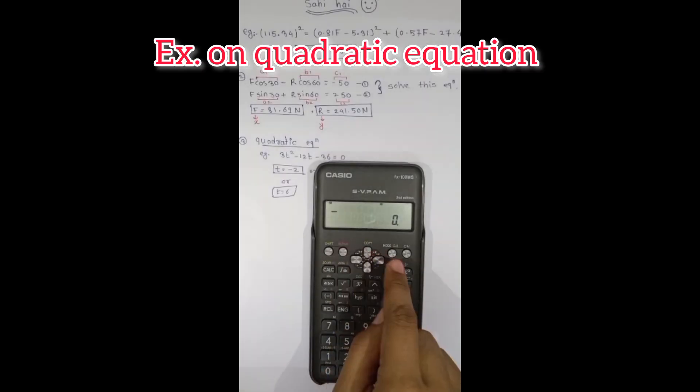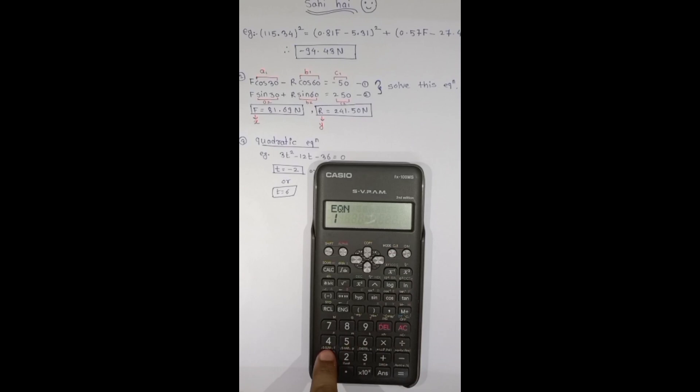Let's take another example which is quadratic equation. Mode clear equation degree 2. Here a is 3 equals to, b is minus 12 equals to, c is minus 36.